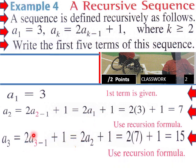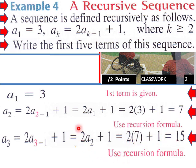For our third term, a₃ = 2a₍₃₋₁₎ + 1, which is 2a₂. Since a₂ is 7, that's 14 plus 1, which equals 15. So using our previous result of 7, 2 times 7 plus 1 equals 15.